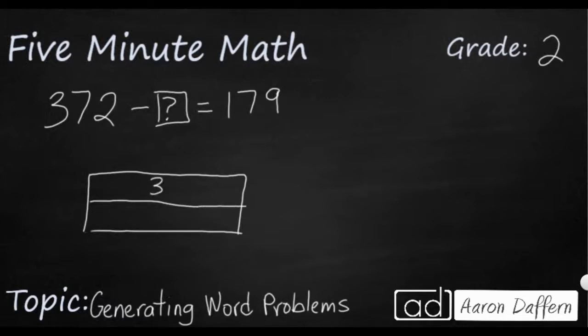So 372 is our whole. One part is 179. We're not sure what the other part is. That's our missing number. So this is a basic subtraction problem.